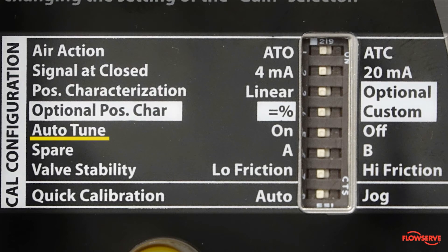The fifth dip switch is called autotune. This switch controls whether the positioner automatically tunes itself to the actuator and valve configuration, or uses preset tuning parameters. The autotune on setting is highly recommended.